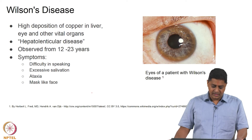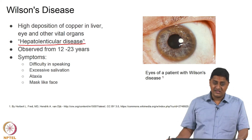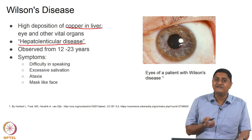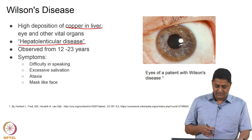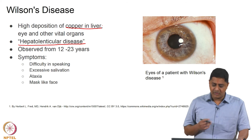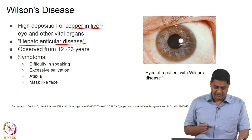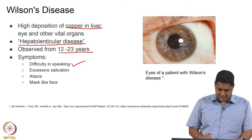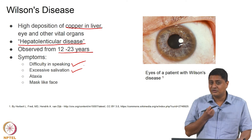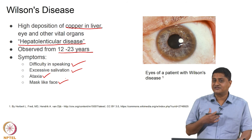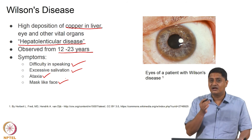Wilson's disease, also called hepatolenticular disease, happens due to high deposition of copper in the liver — 'hepato' means liver-related and 'lenticular' means basal ganglia-related. This unwanted deposition of copper in the liver affects the lentiform or lenticular nucleus and its performance. The age of occurrence is usually between 12 and 23 years. Symptoms include difficulty speaking, excessive salivation, inability to control salivation, ataxia, and a mask-like face — the person is unable to express emotion through facial features.